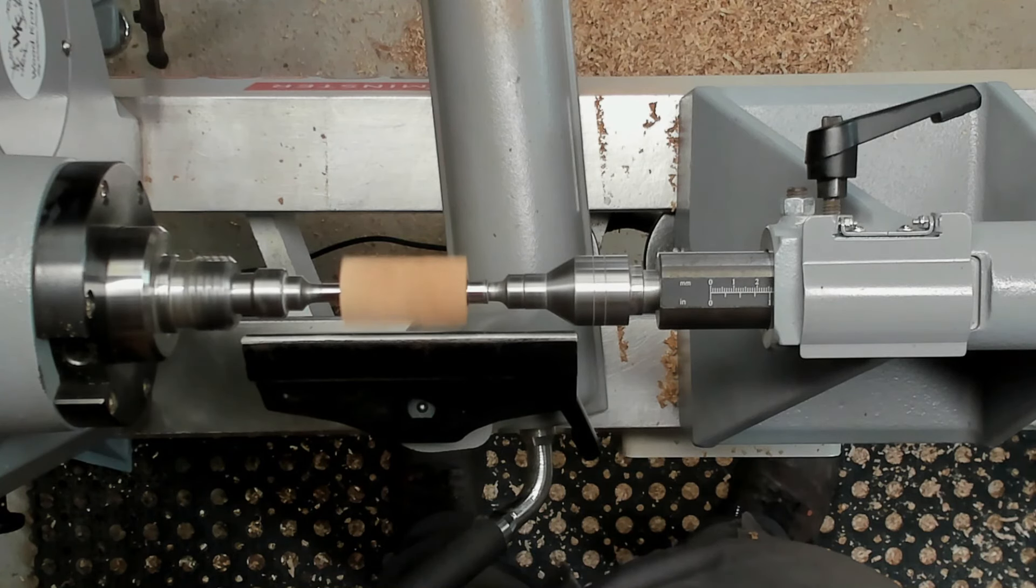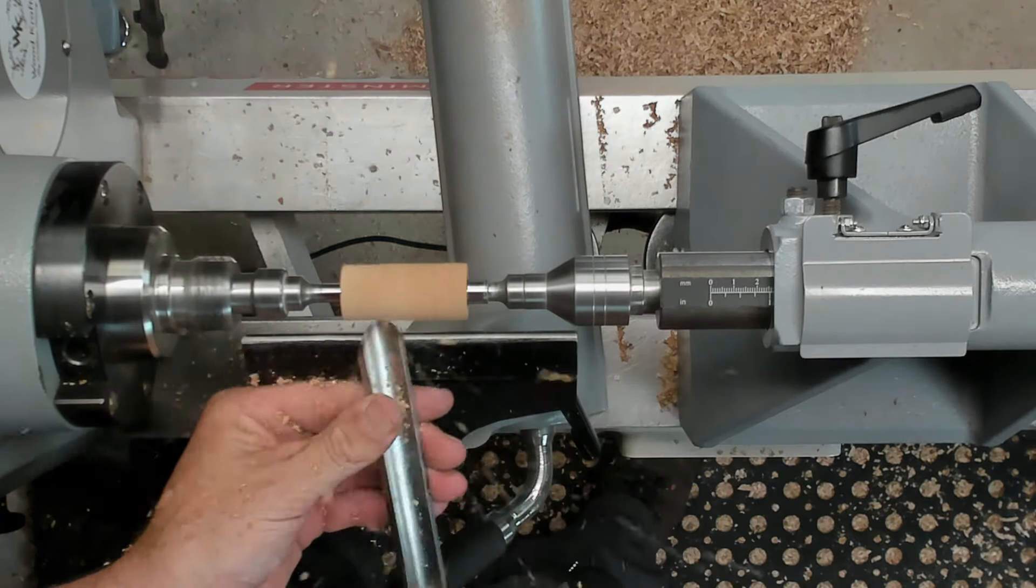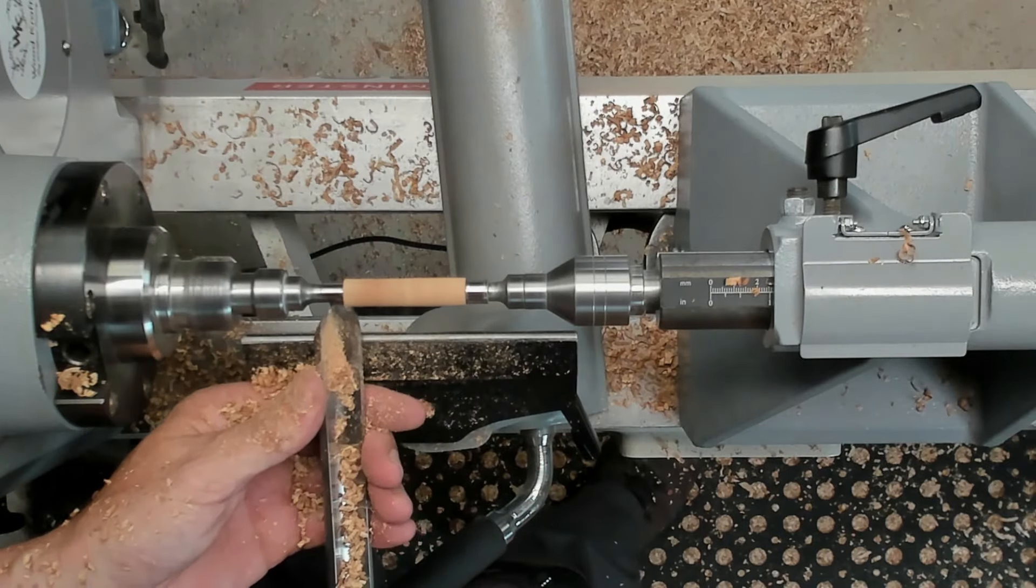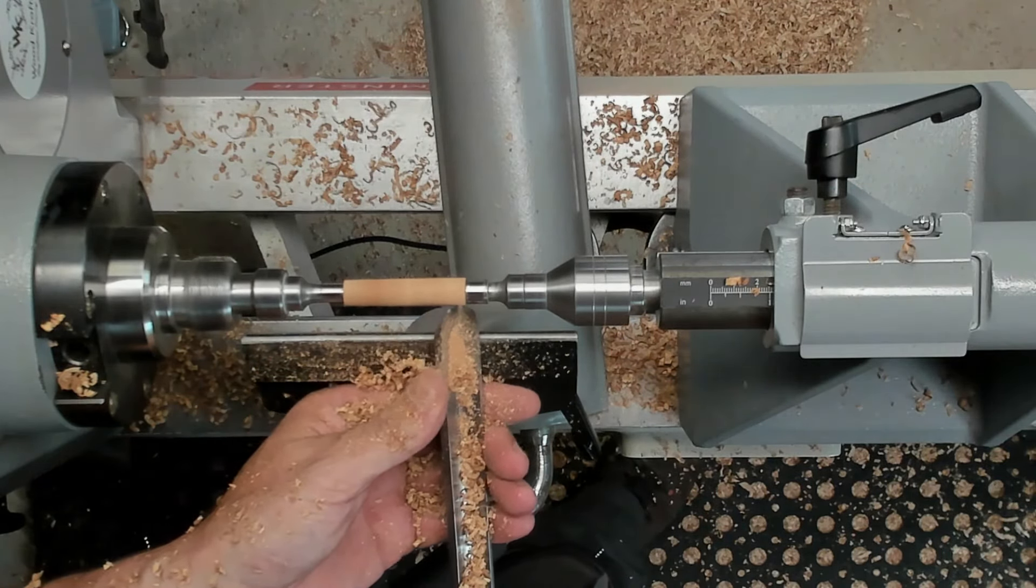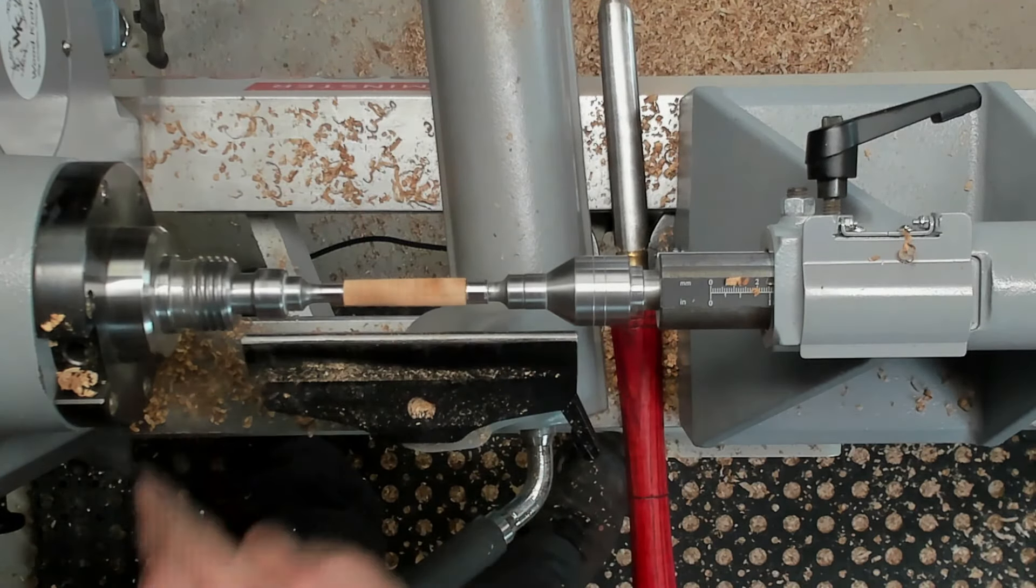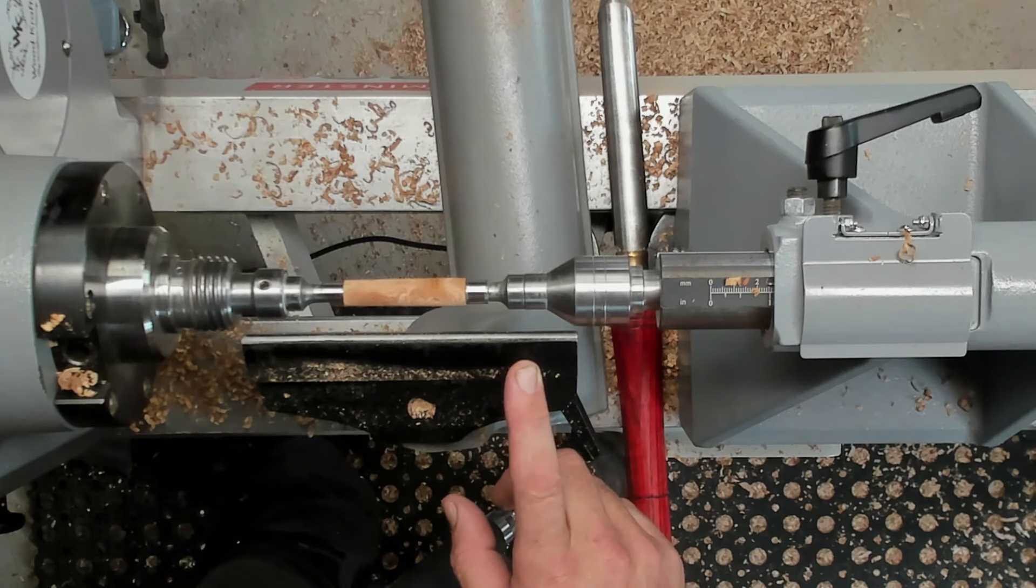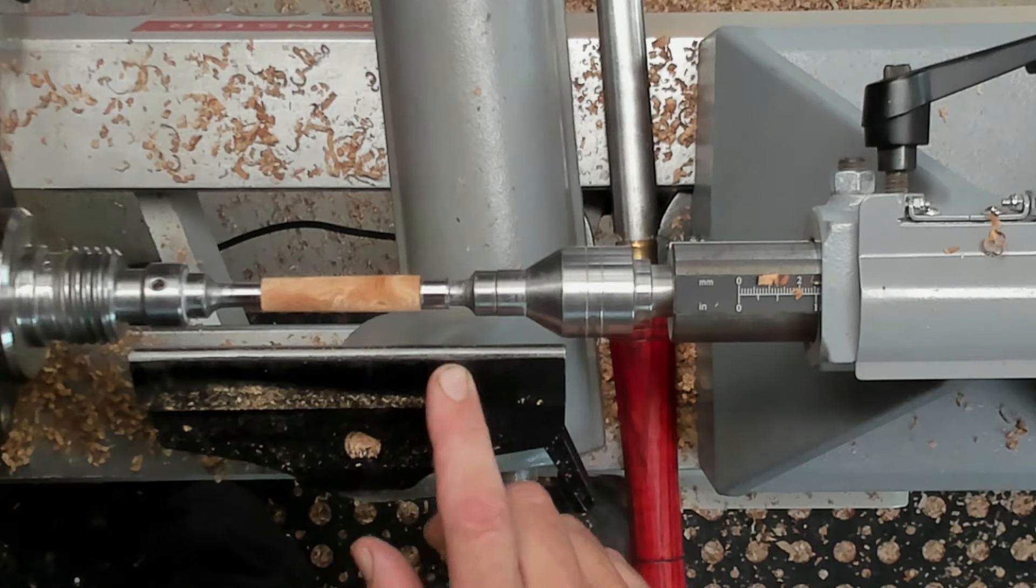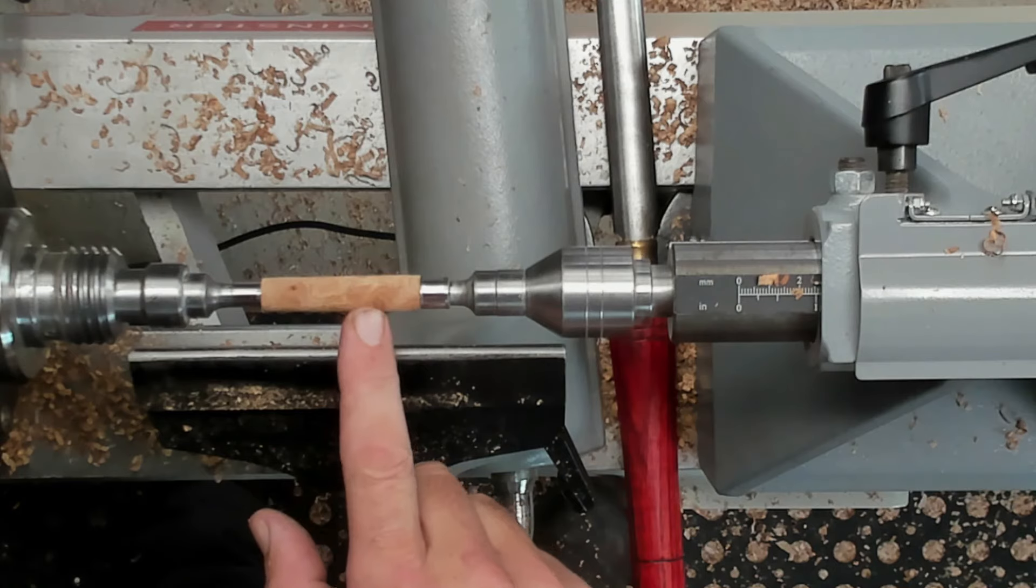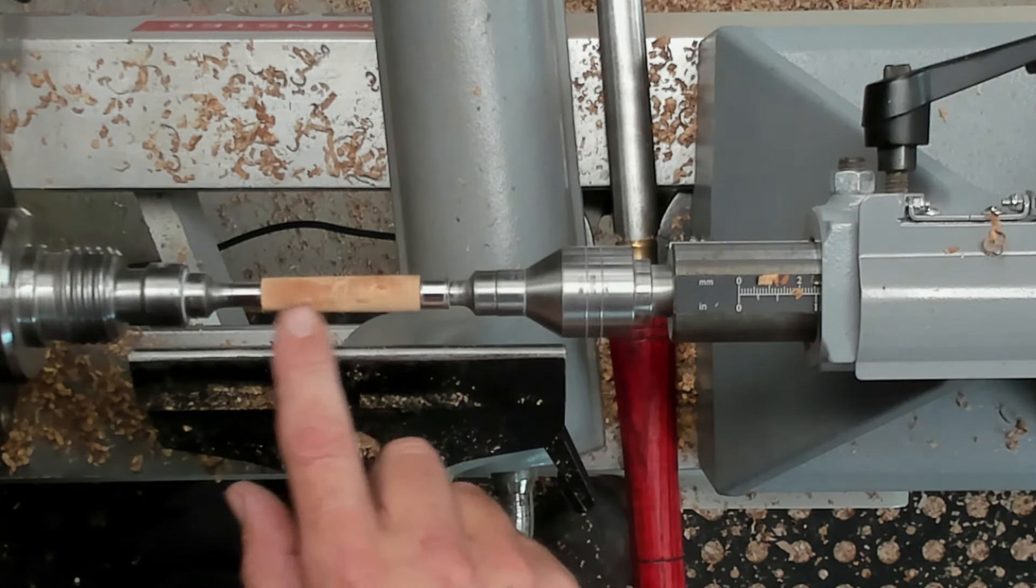These are the little 7mm bushings that come with it. That's the rabbit hole of making pens - every different style of pen you make usually always requires a different set of bushings and different sized drill bits. In some cases it's two size bushings and two drill bits, but for this it's just a standard streamlined one so it just requires the 7mm that comes with the pen mandrel. Now I'll get this turned.